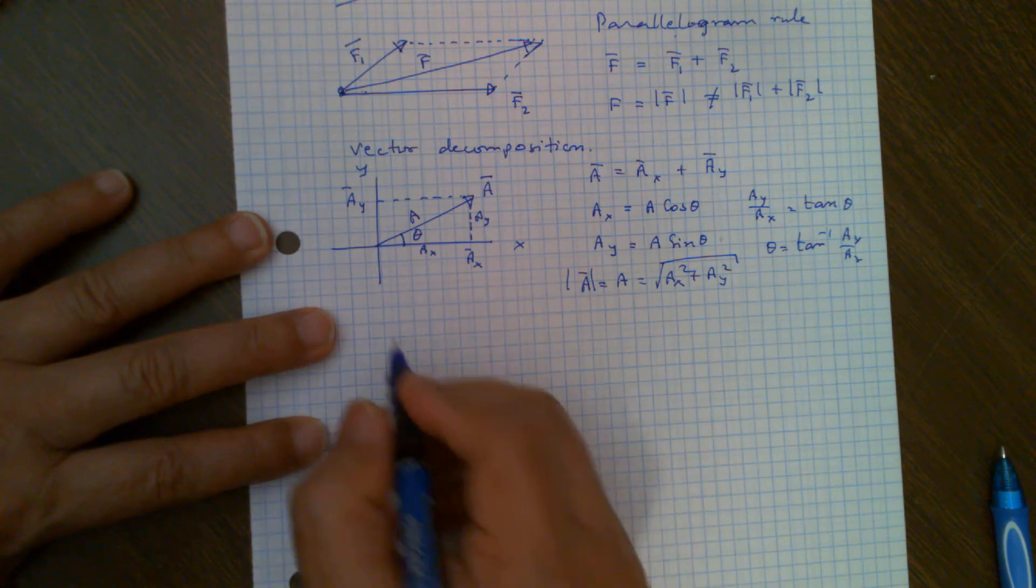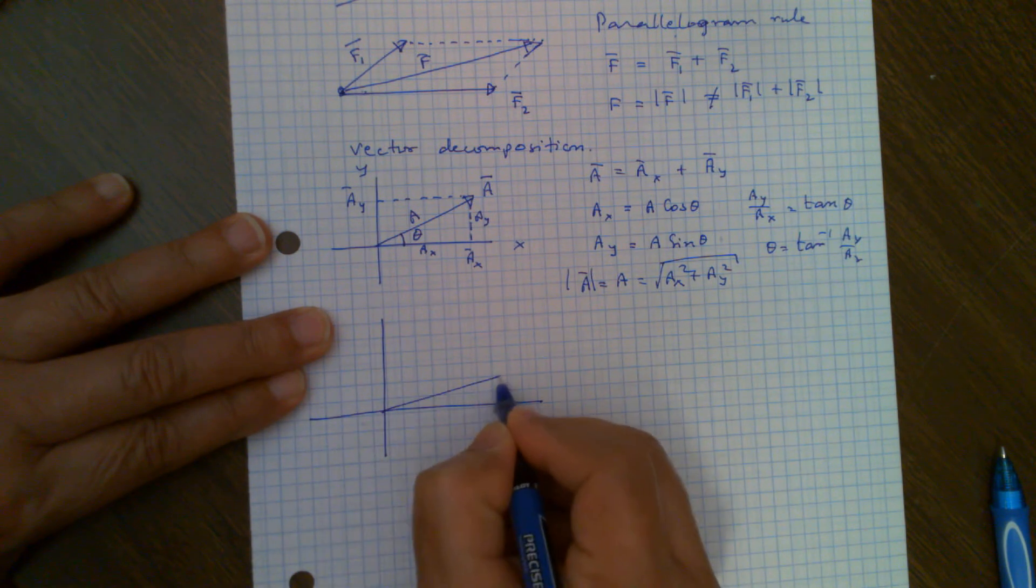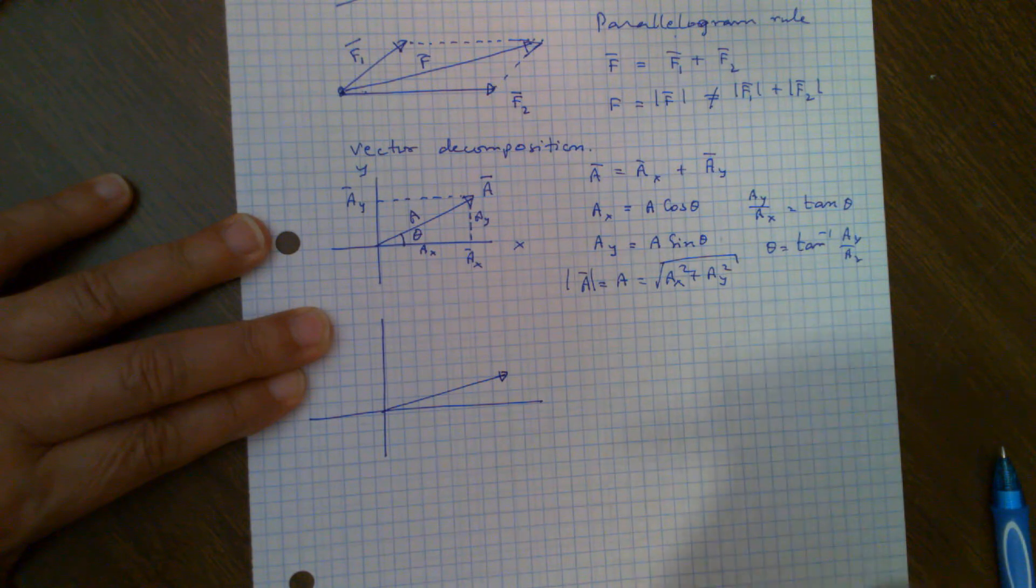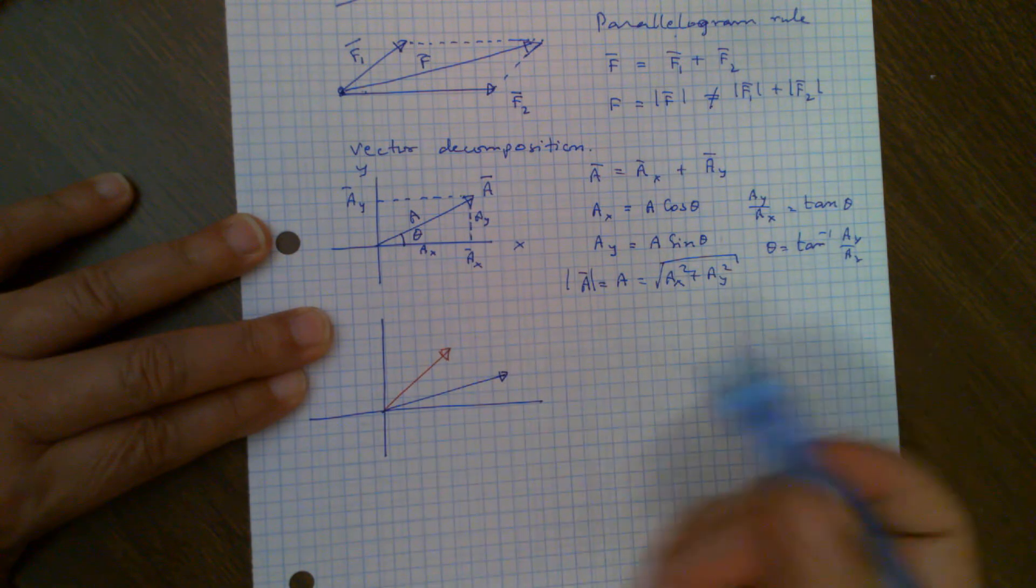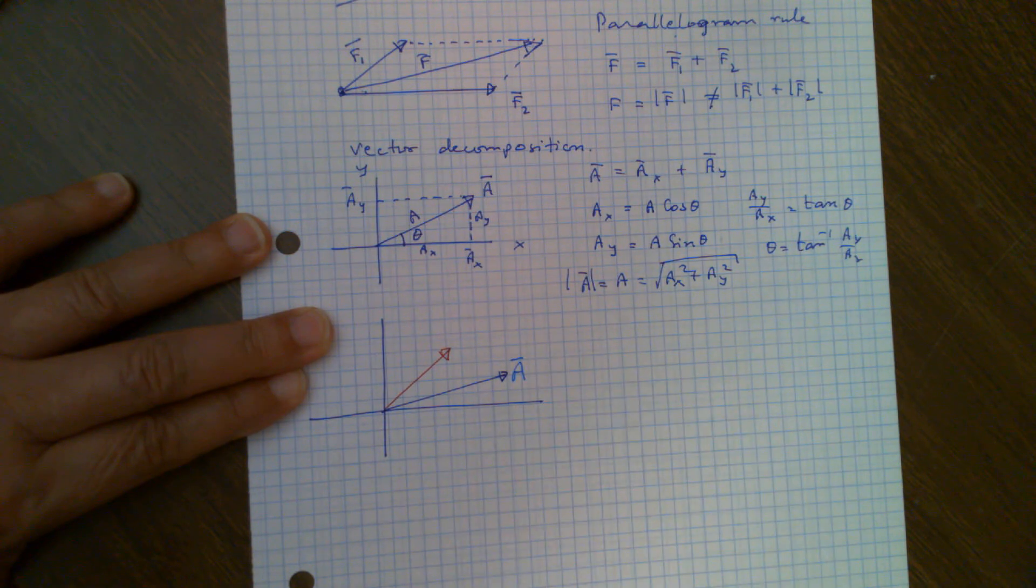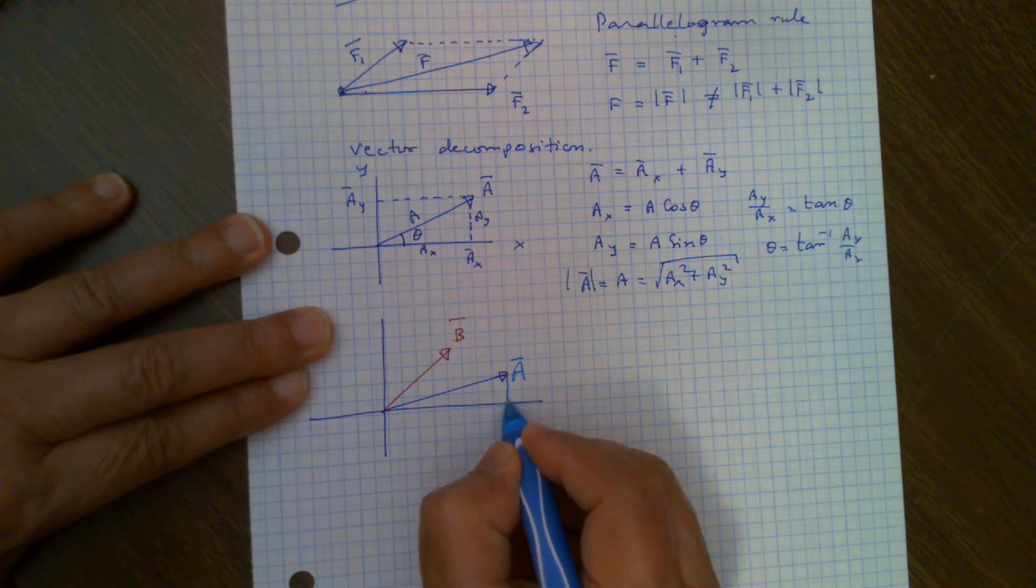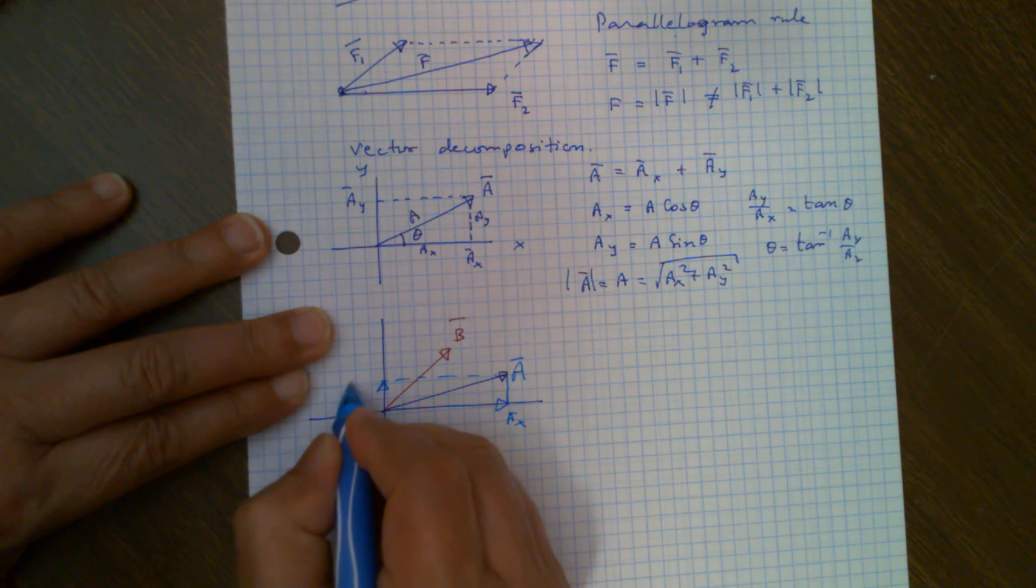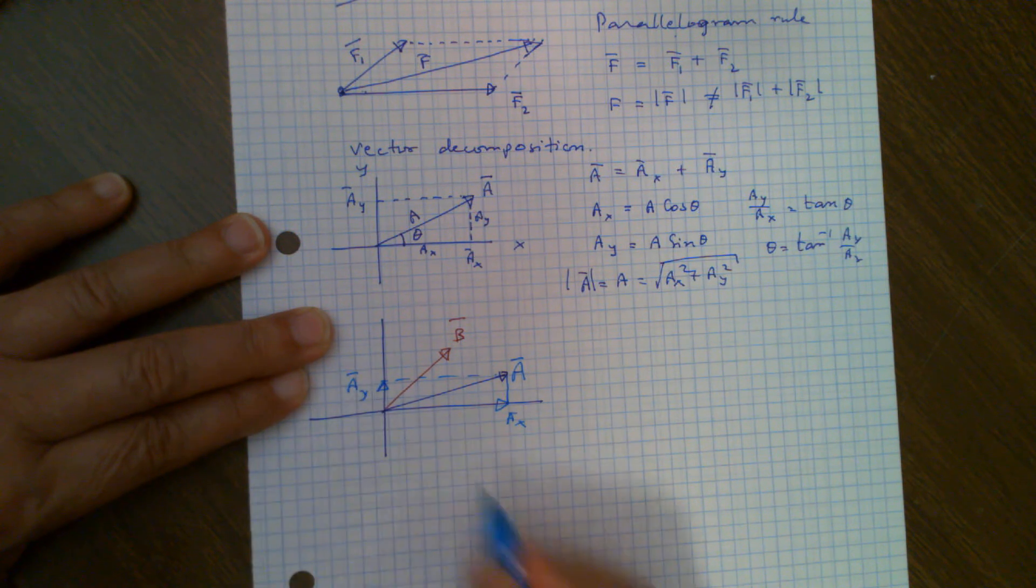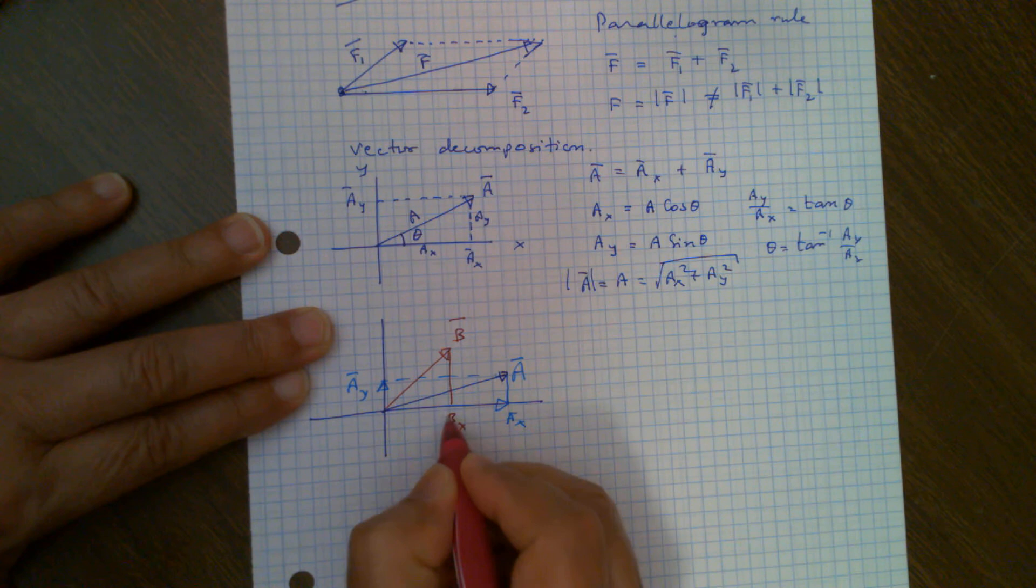Well, the way we use this, let's suppose I have two vectors. Let's suppose I have vector A, and then I'll be fancy, I'll use another color, I'll have vector B. So this is vector A, and this is vector B. Now, as I mentioned before, I can decompose this vector A into two parts. I can decompose it into AX and AY. Similarly, I can do the same thing for B. B will be decomposed into BX and BY.